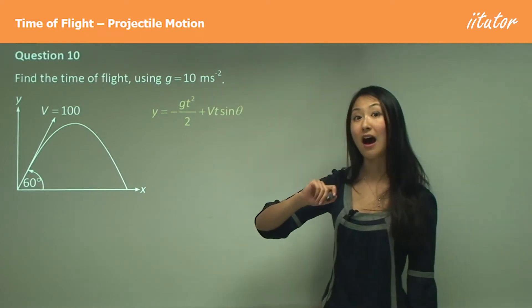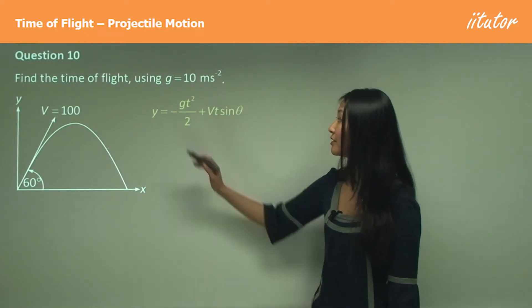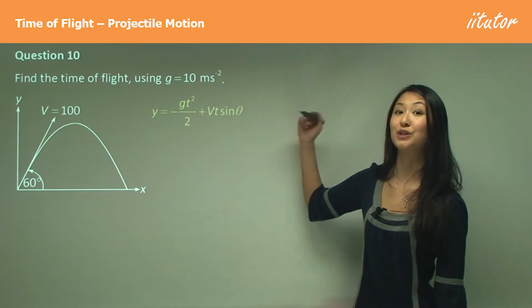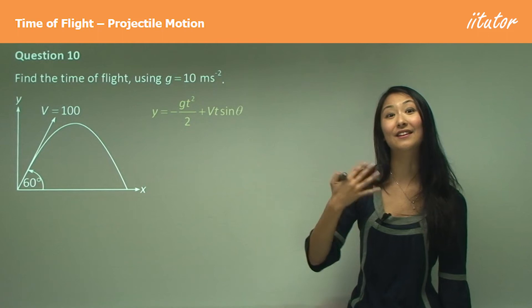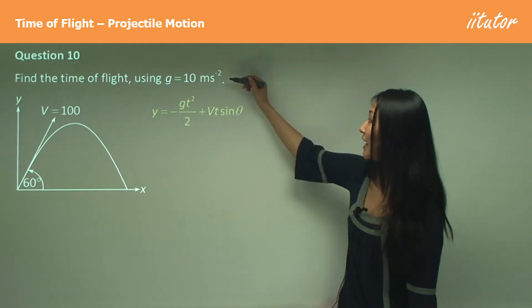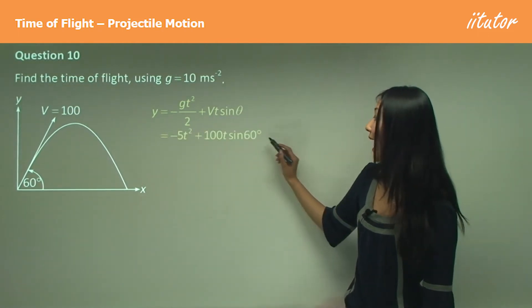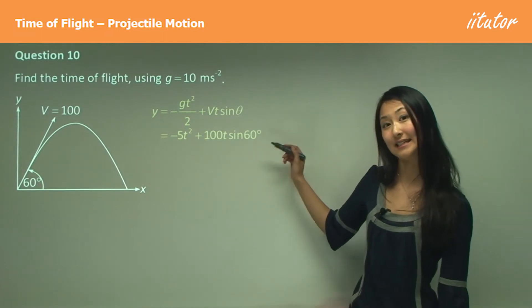Using our vertical motion, so vertical displacement equals this, which we would have worked out in a previous question, and substituting in the various values. So g equals 10, v is 100, and θ in this case is 60 degrees.